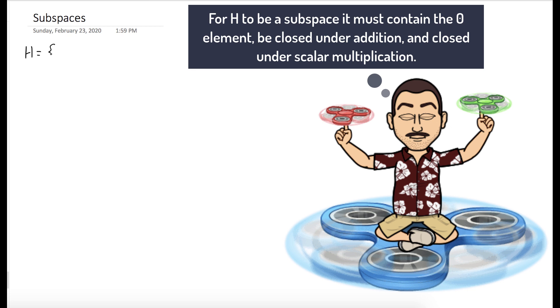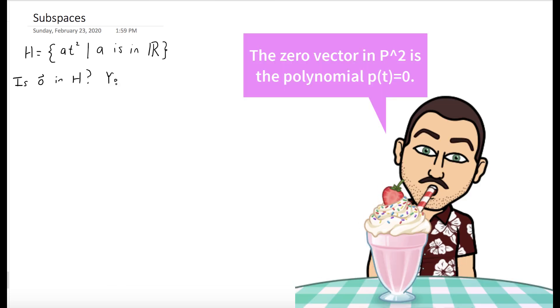So we want to test if H, the set of polynomials of the form at² where a is a real number, is a subspace of P2. We have to check that H contains the zero element of P2. The zero polynomial is p(t) = 0. Well, 0·t² = 0, so it's in H.